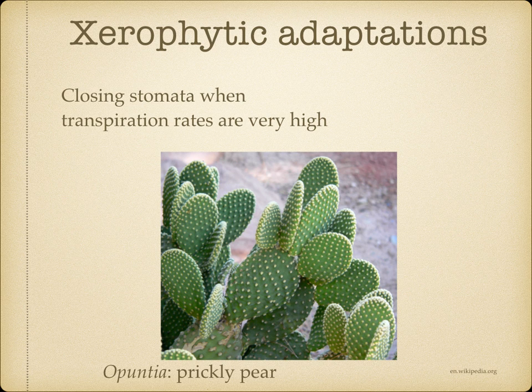Closing the stomata when transpiration rates are high — plants such as cacti can close their stomata during the hottest parts of the day. Some plants called C4 plants use a modified form of photosynthesis that makes more efficient use of carbon dioxide; you'll learn more about this in the second year of A-level. Other plants produce abscisic acid in response to the stress of dehydration, and this causes the stomata to close.